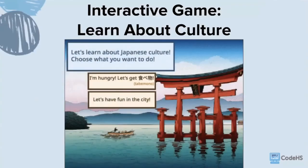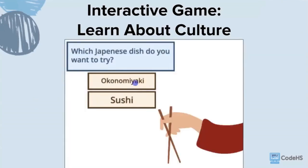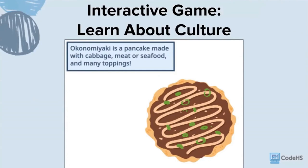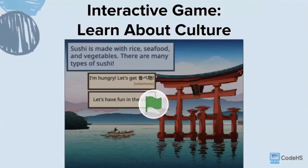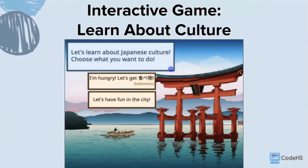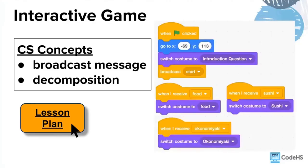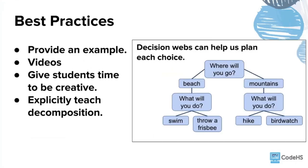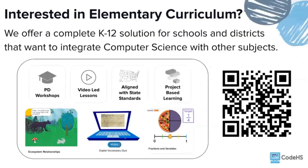Best practices for the colonies lesson include using comments to guide students like a how-to guide, and providing a detailed example by completing the entire first date for students. We also keep using graphic organizers. The last lesson is an interactive game to learn about culture, using Japanese culture as an example where users click through questions and get different outputs. The main CS concepts are broadcast messages and decomposition. Provide a detailed example, use videos to guide students, give them creative time, and explicitly teach decomposition. We offer a complete K-12 solution for schools and districts.